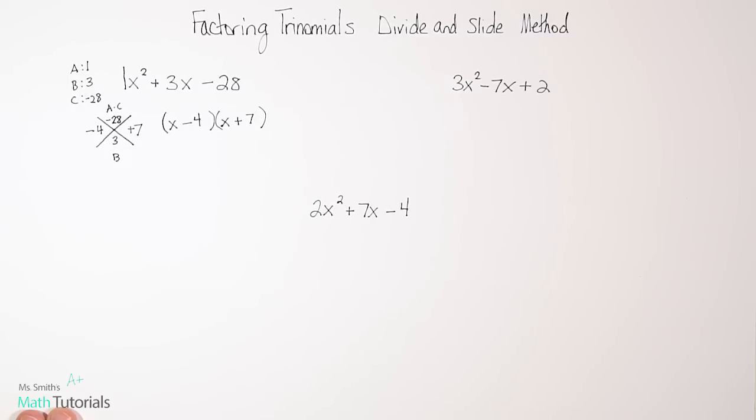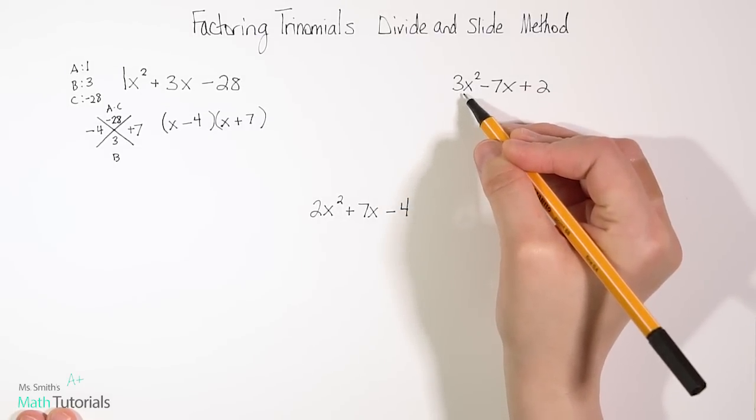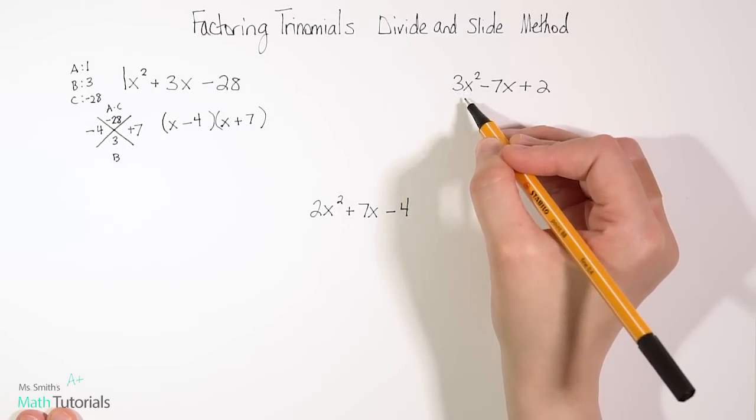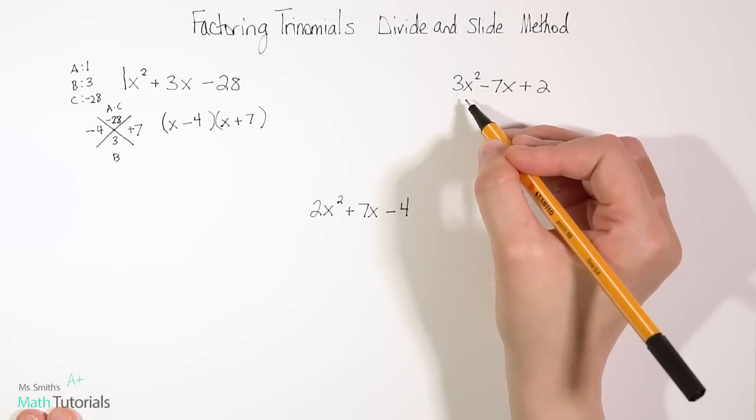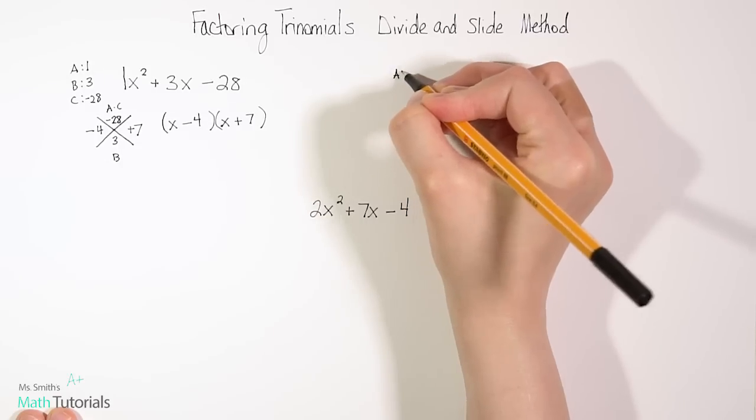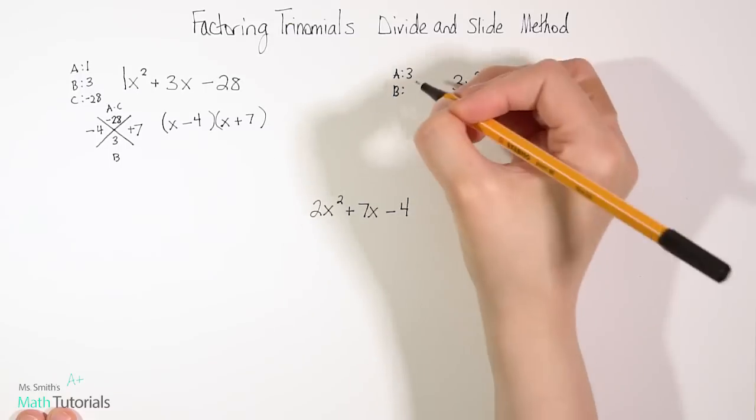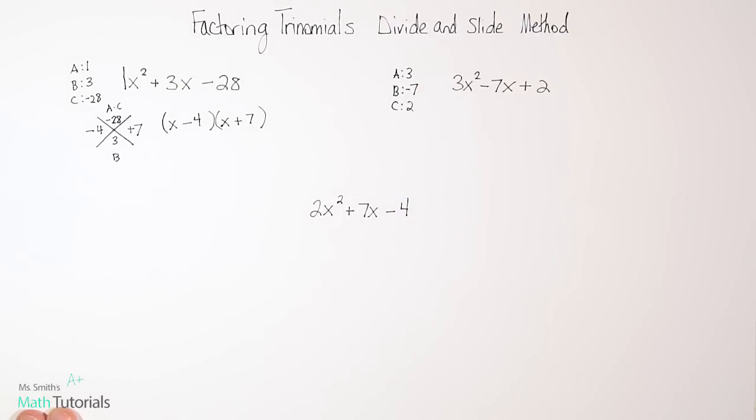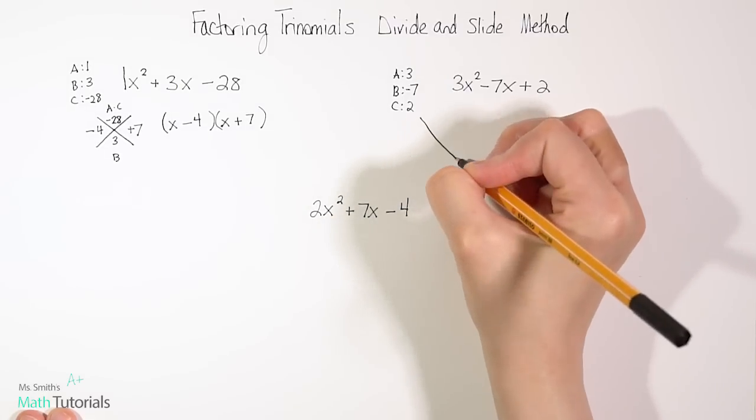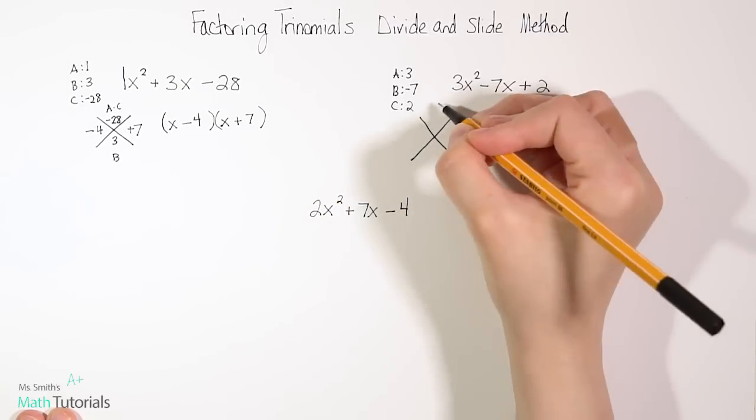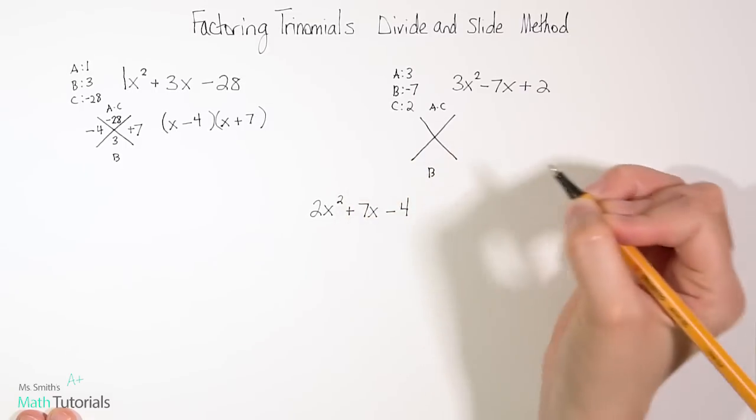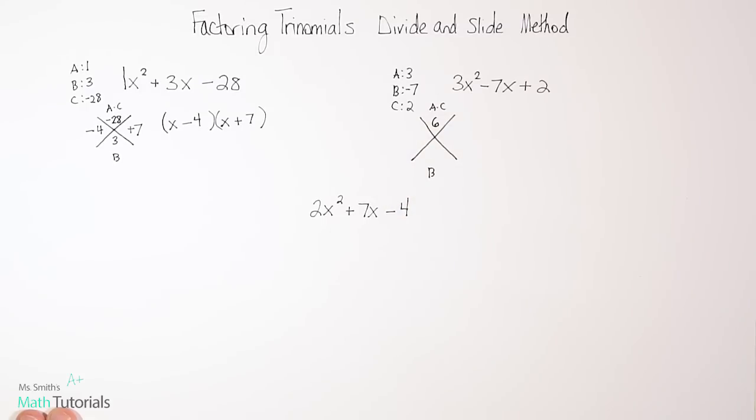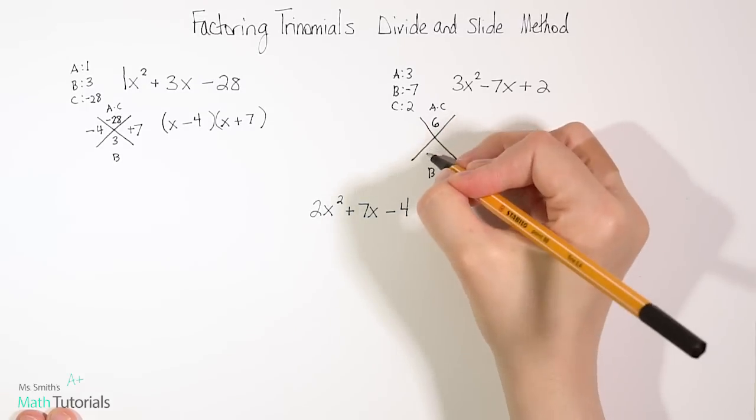So let's look at another example. Now notice this one is a little different because we don't have a 1 in the place of a. We have a 3. And that's going to make a big difference when we get to our final step. Let's go ahead and just note on the side a is 3, b is negative 7, and c is 2. So we're still going to build our X the same way. Our a times c goes up top. Our b goes on the bottom. a times c is 6. 3 times 2 is 6. And b is negative 7.